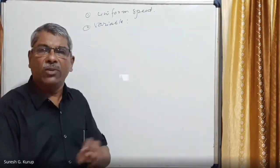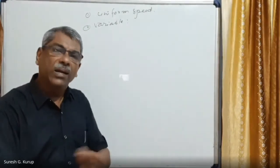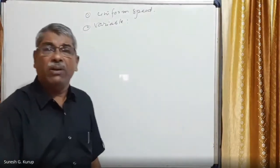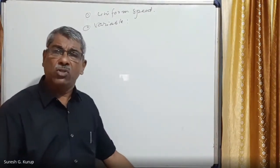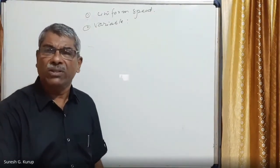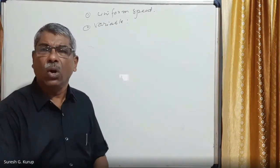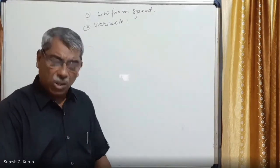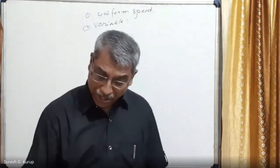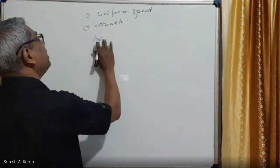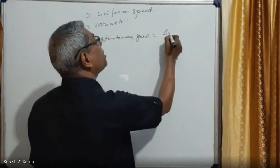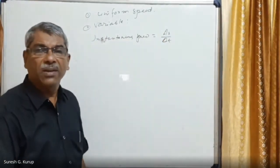When a body moves with variable speed, its speed is changing at every instant, so we cannot fix a single speed value. In that condition, we calculate a quantity called instantaneous speed — the speed of the body at a particular instant. Instantaneous speed is a small displacement divided by a small time interval.